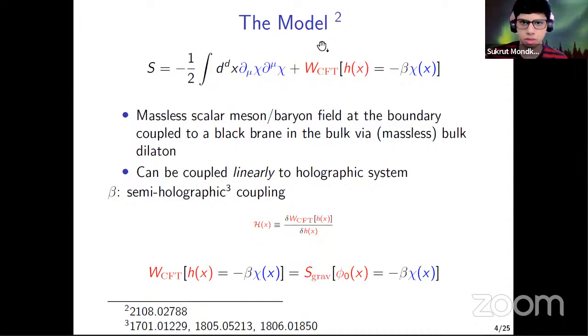Small h is the source which deforms this CFT. Now the two sectors are coupled with each other with this special kind of coupling or semi-holographic coupling, where the source of each sector is promoted to be the functional operator of other sector. So the source that deforms the strongly coupled sector, the CFT, is operator of the weakly coupled sector, this massless scalar chi. And this beta is the semi-holographic coupling. Okay, sorry.